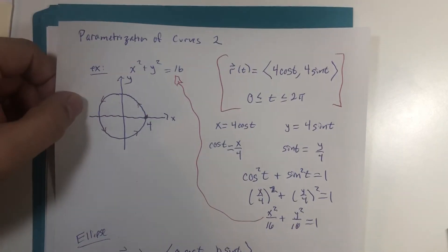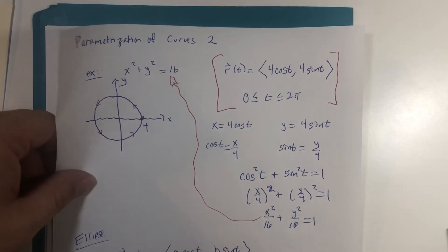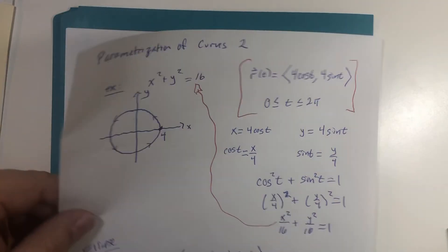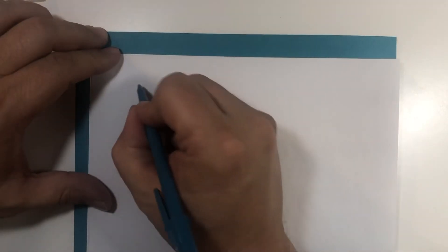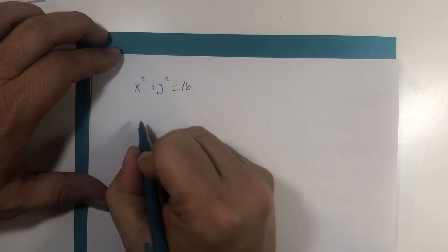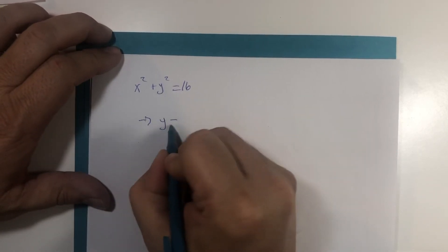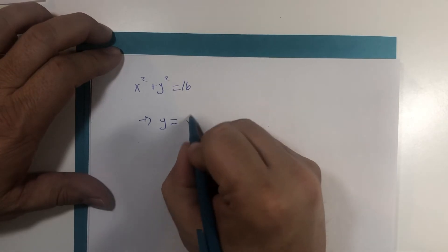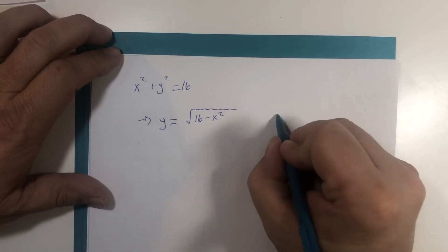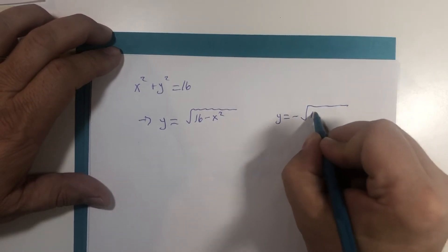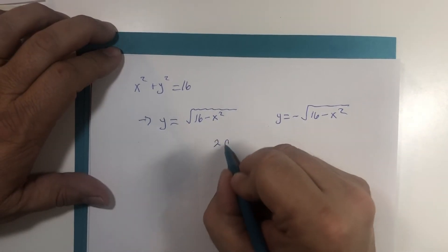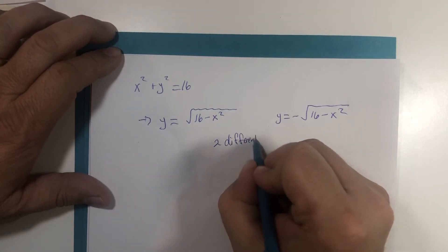I'd like to look again at the circle though, in an algebraic way different from this. This is my preferred, but I want to show you an alternative. x squared plus y squared is 16. So if we were to solve this for y equals, we would get two possibilities. The square root of 16 minus x squared, but we would also get the negative square root of 16 minus x squared. These are two different functions.